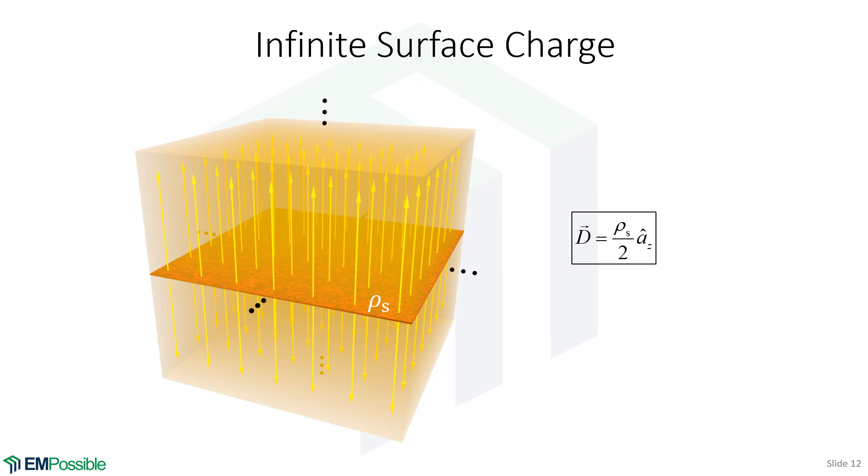And so we have a constant electric flux, no matter how far we are away from that surface. It's the surface charge density divided by two. Why the divided by two? Well, it also creates a field on the other side. So you can roughly think of it as half the energy.